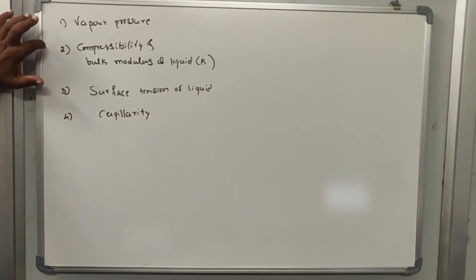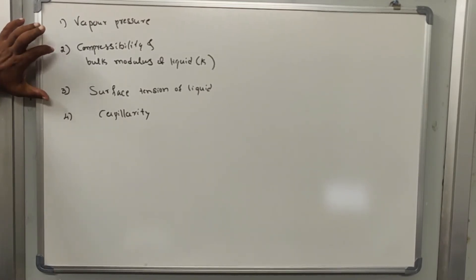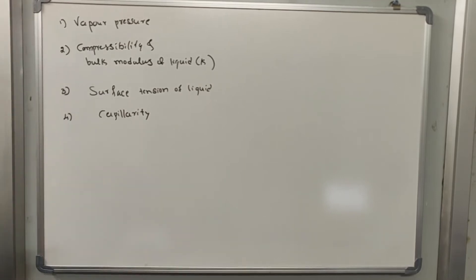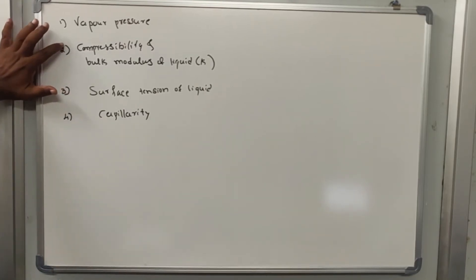Next is compressibility and bulk modulus of elasticity, denoted as K. Compressibility is that property of the fluid or liquid whereby, when an external force is applied on the volume of the liquid, it can be compressed. When the forces are released, the compressed volume of liquid will regain its original volume. That property is known as compressibility.